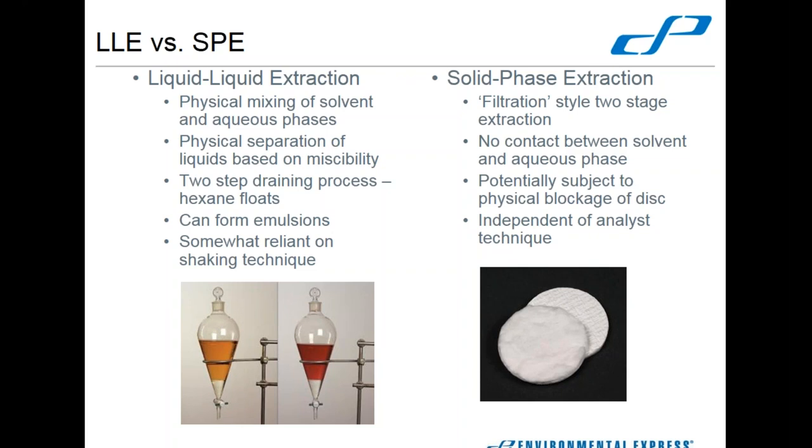Those pictures are not oil and grease extractions, I didn't have any good pictures, so I used color-coded surrogates just to give you a visual. The two layers would be reversed. The sample, which is often colored, is going to be on the bottom. The aqueous layer is heavier than hexane. One of the big problems with liquid-liquid is you have a strong probability of forming emulsions. Liquid-liquid can be somewhat reliant on your shaking technique.